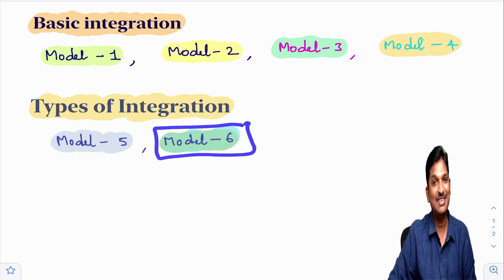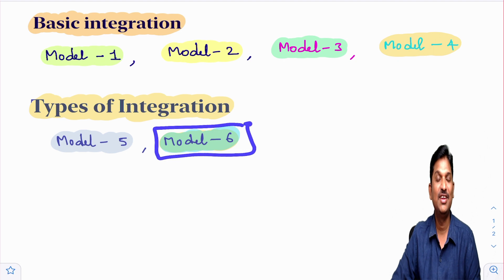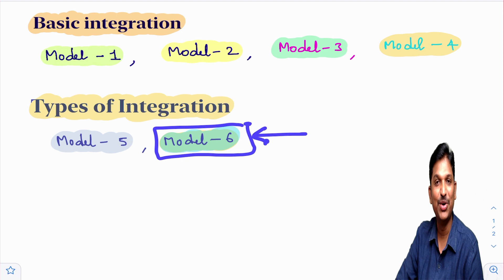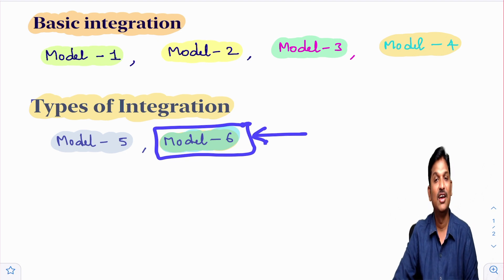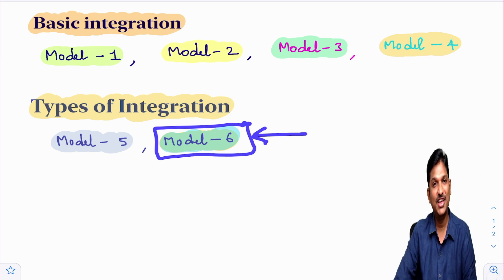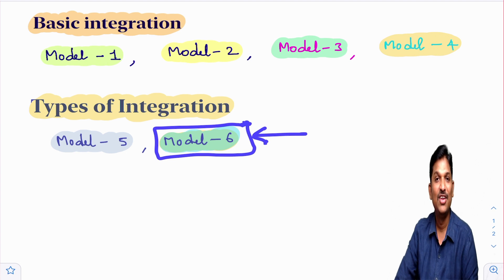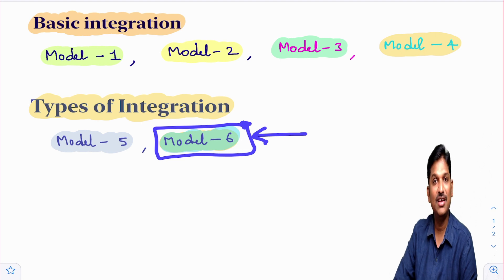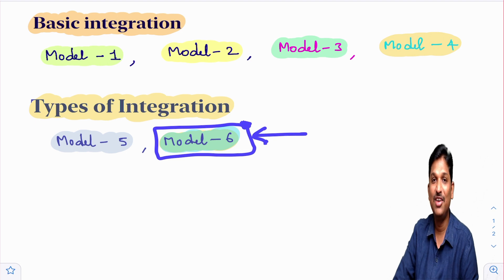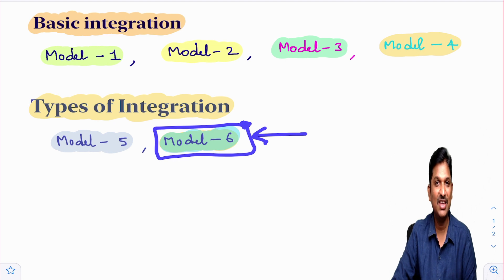Model number 6 is integration by parts — just like the product rule in differentiation. Many students actually find this model easy. Some students feel it is difficult to memorize the integration by parts formula, but I give a very easy method. Please check that course; the link is in the description.